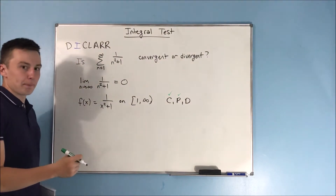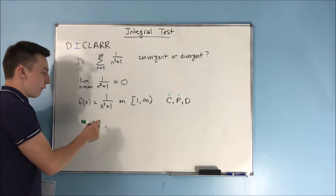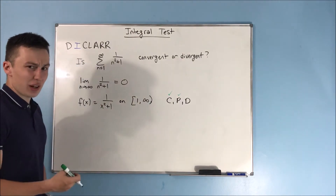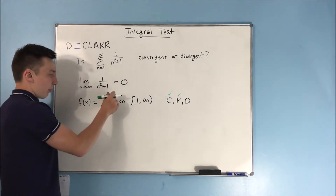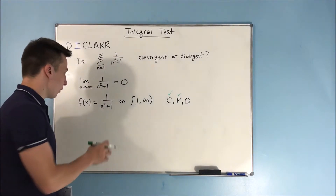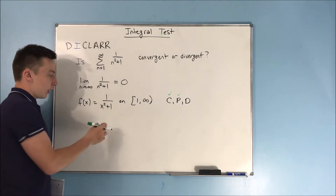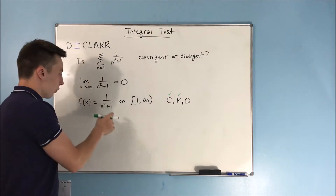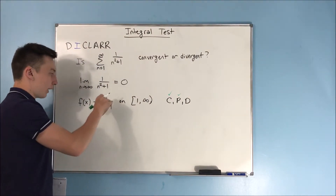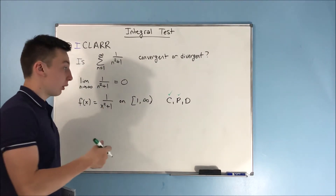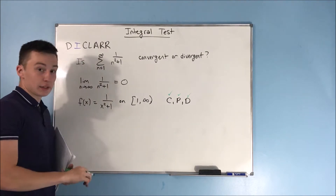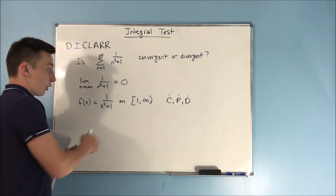Is it decreasing? If you increase x — starting at one you get 1/2, but as you go to three, four, five, your denominator gets larger, which means the whole fraction gets smaller and smaller. So it is decreasing. All three conditions are met: continuous, positive, and decreasing on [1, ∞), so we can use this function.